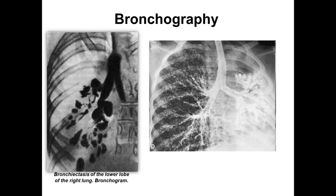Bronchography is a very good method. Before bronchography, you should clean the bronchial tree by bronchoscopy. On bronchography, you can see saccular bronchiectasis on the left side. On the right side is a normal bronchial tree; on the left side, you see bronchiectasis — enlargement of the bronchi.